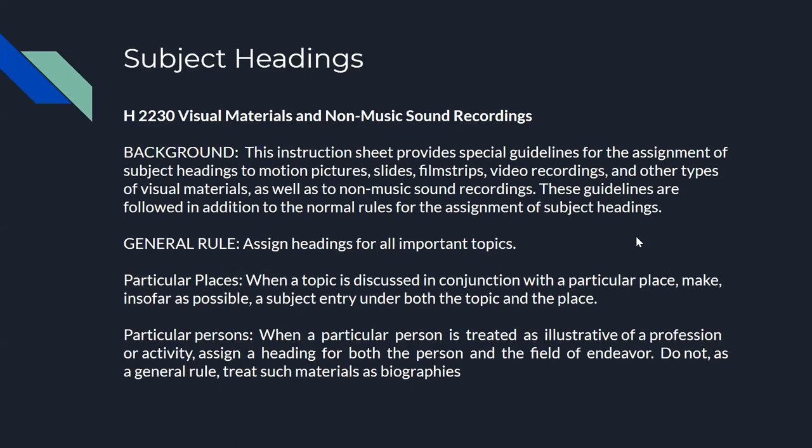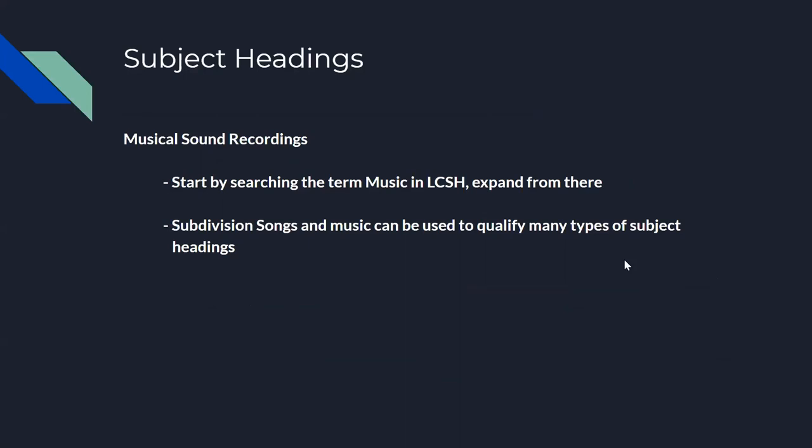Subject headings are always important and can aid in the discoverability of materials. In the Subject Headings Manual H 2230, you can find guidance for non-musical sound recordings. In general, subject headings should be added for all important topics related to non-musical sound recordings, also places and persons of importance. For musical sound recordings, search for 'music' in the Library of Congress Subject Headings database. The entry for music includes subdivisions and a list of narrower terms that can lead to other effective subject headings, like breadcrumbs you follow.